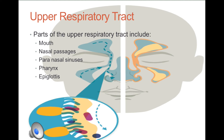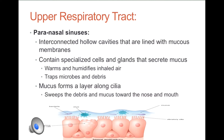The paranasal sinuses are lined with mucus membranes. This membrane secretes mucus in a layer along the cilia. The mucus traps the inhaled microbes and debris, while the cilia sweeps them back towards the nose and the mouth.